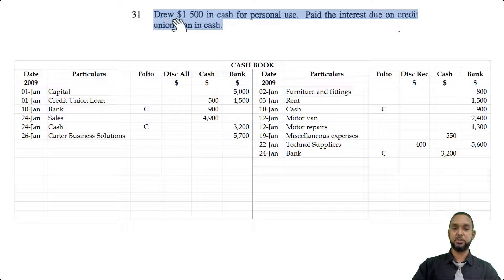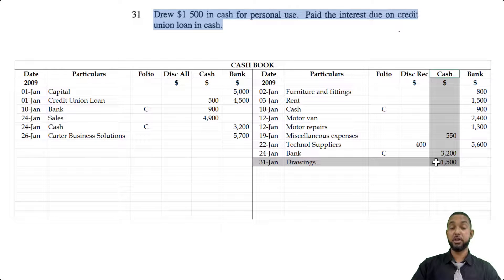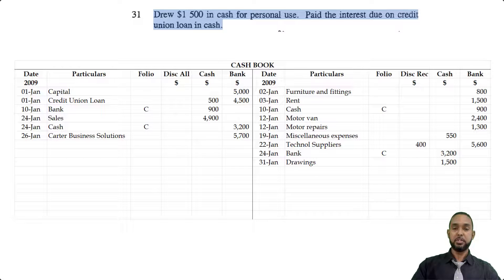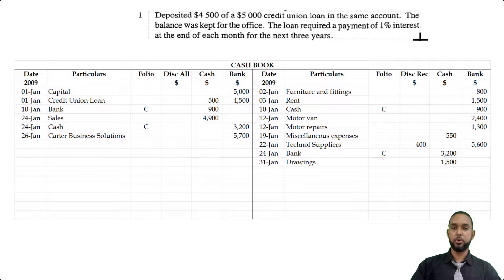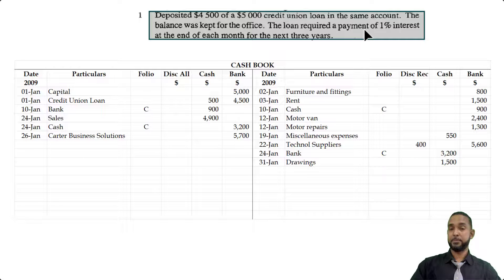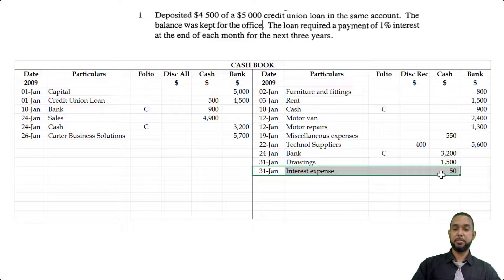On the 31st, the owner drew $1,500 in cash for personal use — that's drawings. It goes on the credit side under the cash column: $1,500 coming out of cash for the owner's personal use. Also on the 31st, we paid the interest due on the credit union loan. Going back to the top, when we took that loan of $5,000 at 1% per month, that's $50. We put that on the credit side under cash because it was paid in cash — making a payment out of cash decreases cash, and to record a decrease in an asset you credit the asset account.